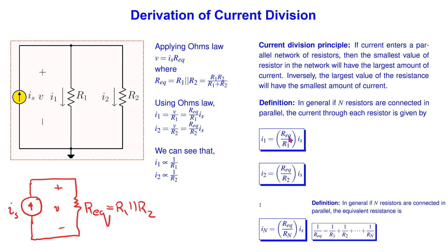In the numerator, we have the equivalent resistance which can be calculated using the general formula shown here. In the denominator, we have the resistor through which we wish to determine the current.